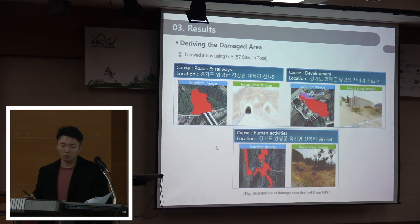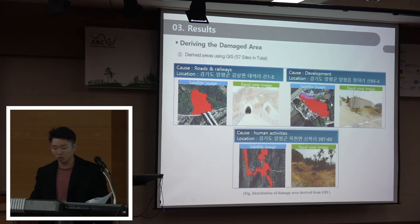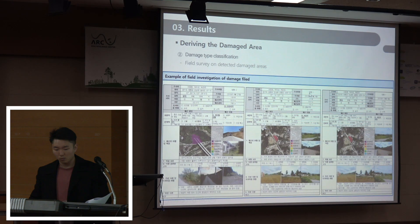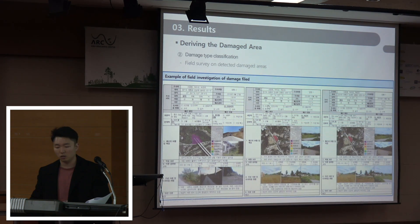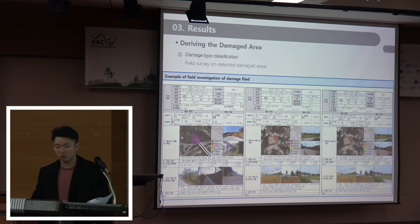This is the case of the aerial image and road view image in the direct area. From this imaging, we can predict the cause of the damage. This is the result of the field survey of the detected damaged area, along with the survey form. From this survey, we can identify the cause and effect of each damaged area.